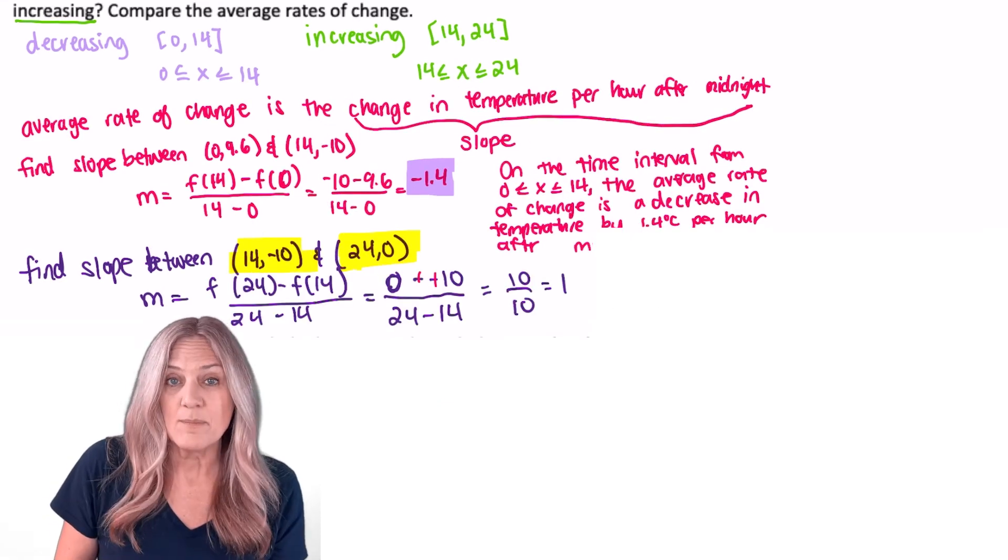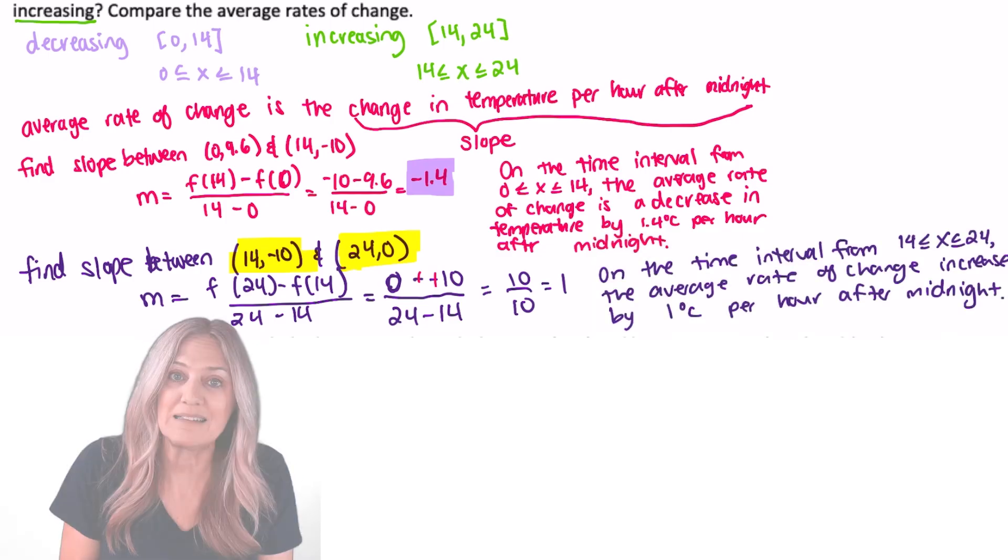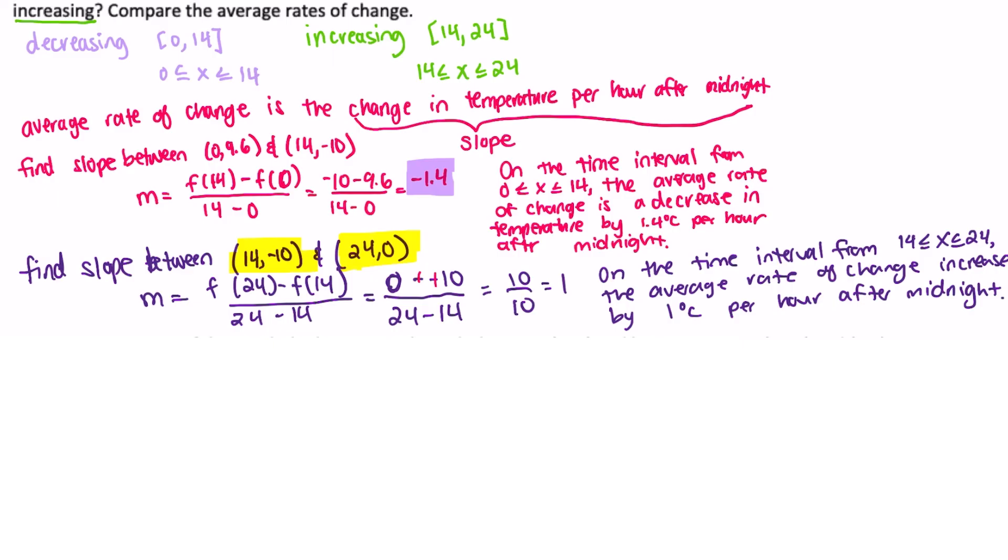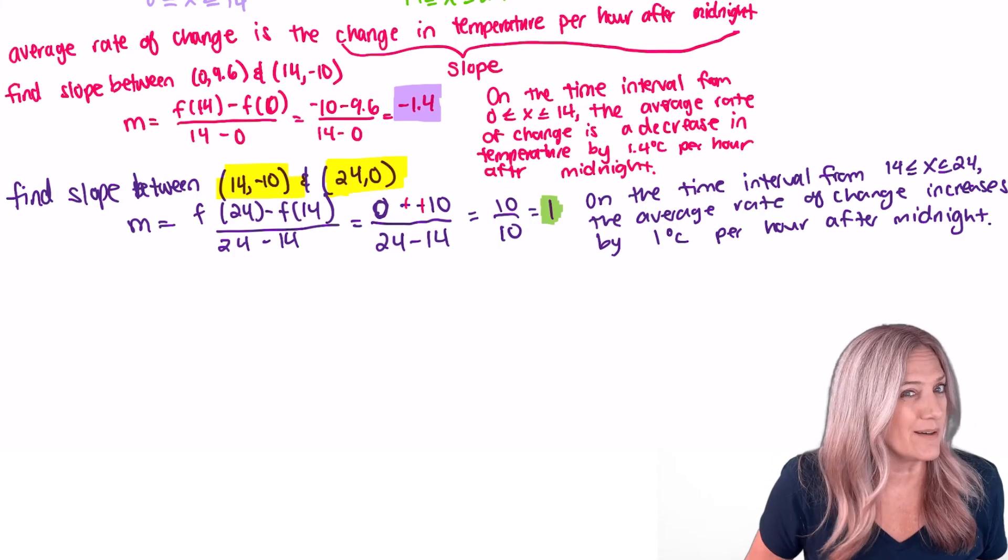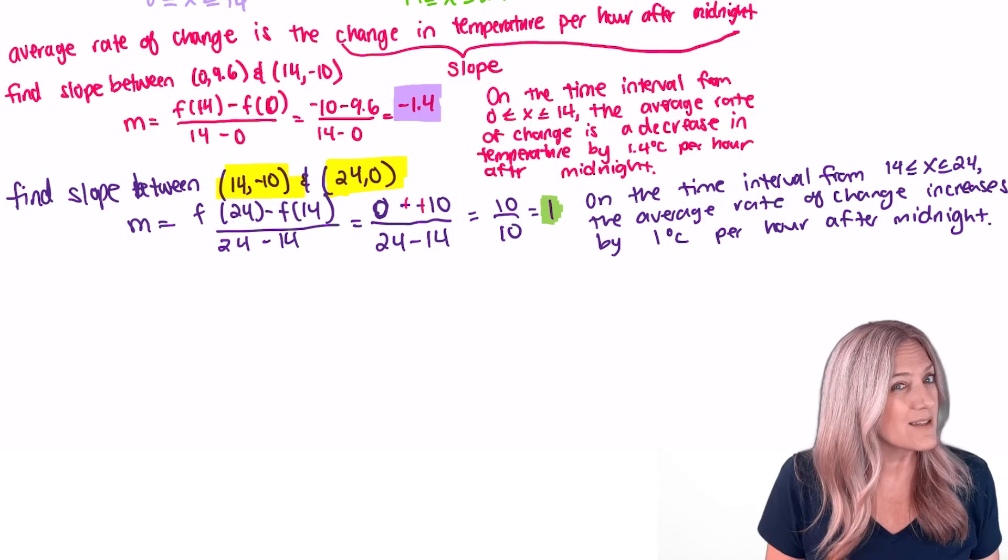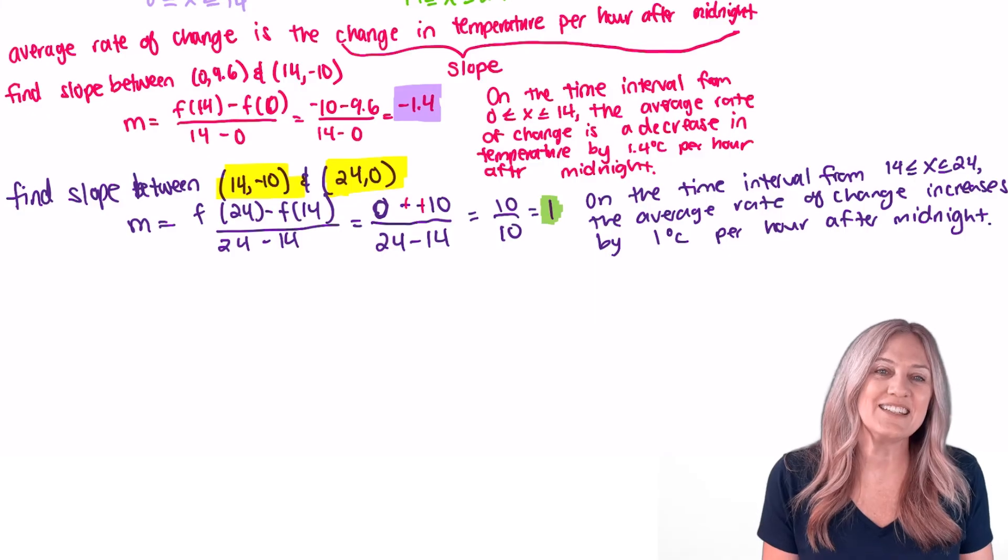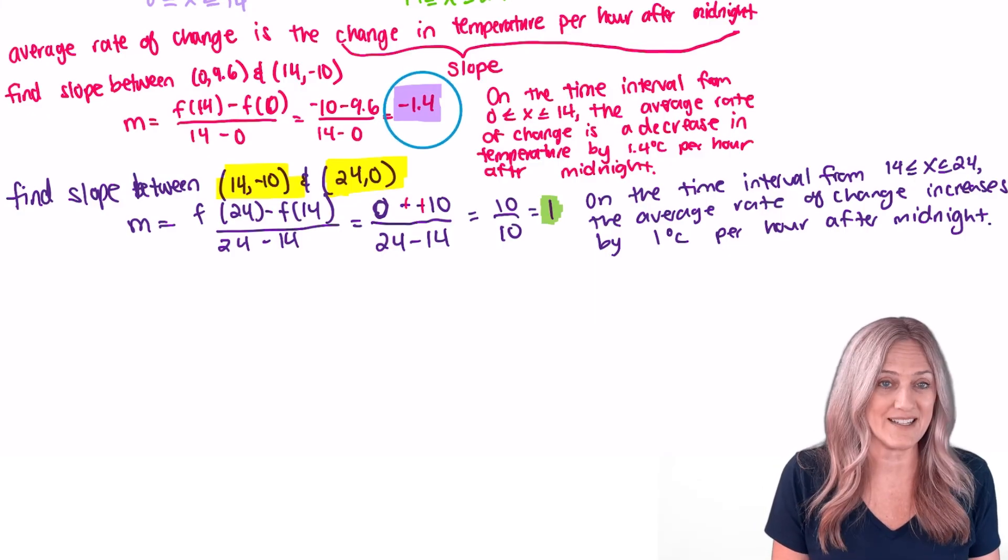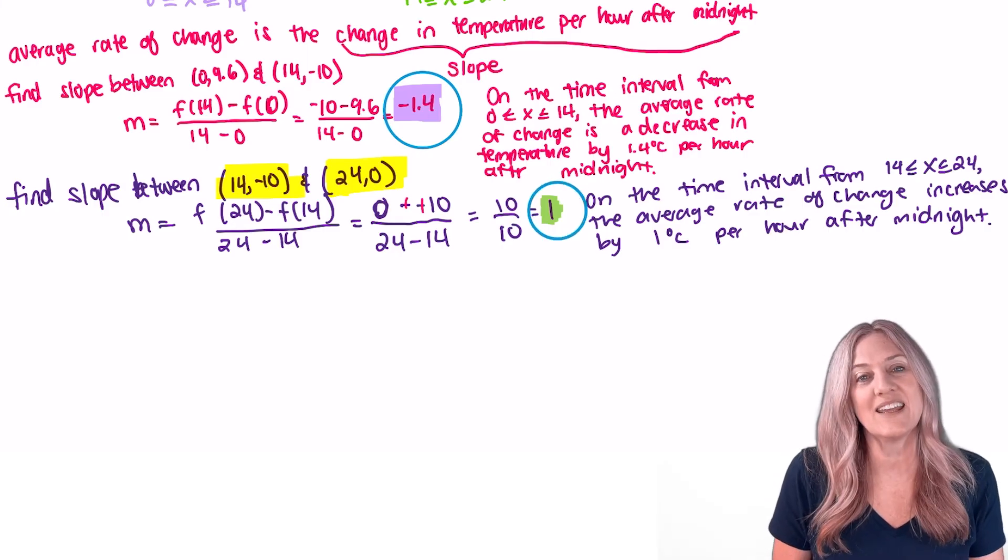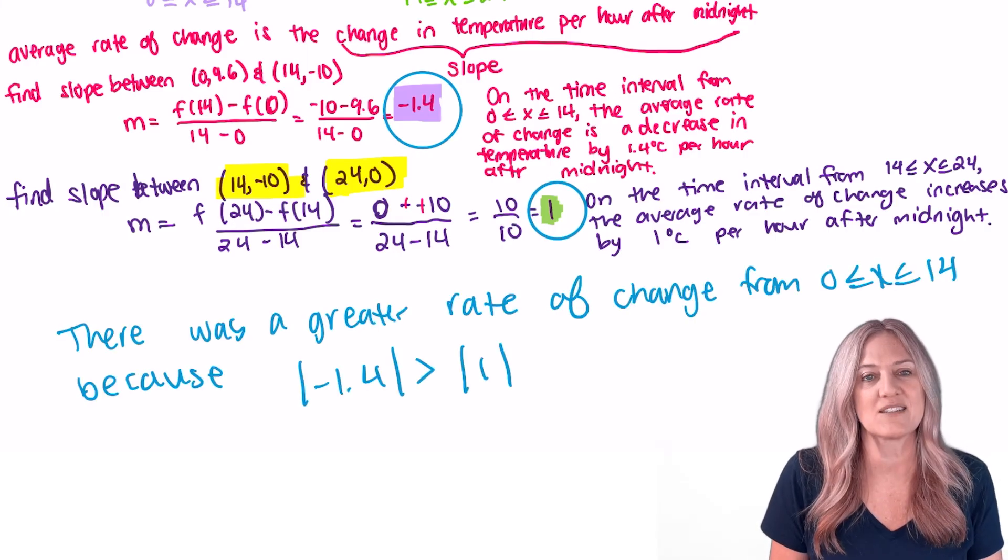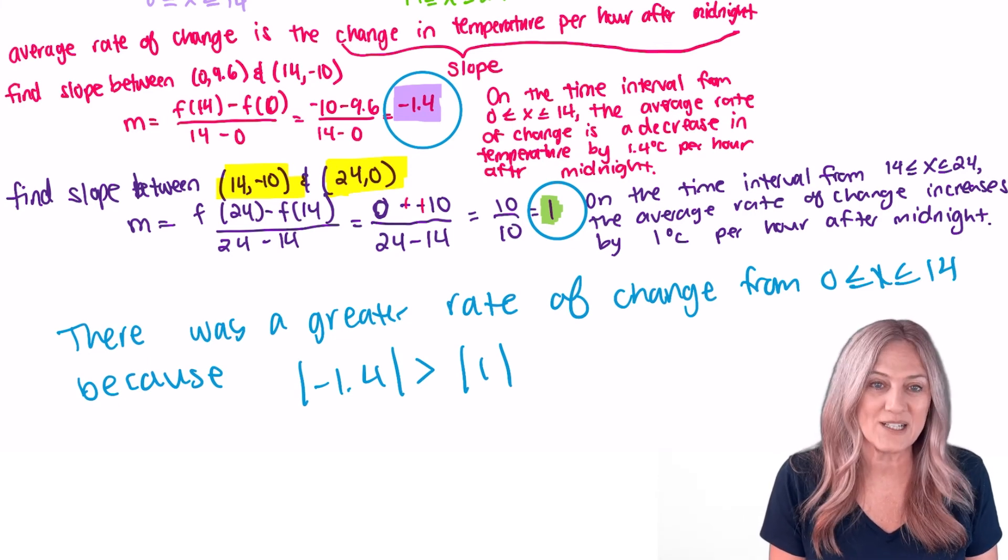Write a statement in context of this situation explaining what that average rate of change means. Let's compare our average rates of change. Which one was greater? Well, let's think this through. From 0 to 14, we actually had a decrease of 1.4 degrees Celsius. Whereas from 14 to 24, we had an increase of 1 degree Celsius. So we actually had a greater rate of change from 0 to 14.